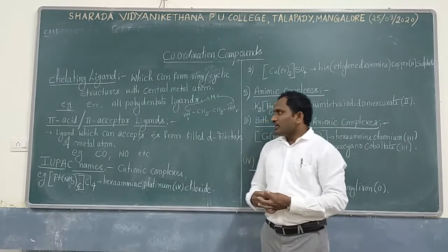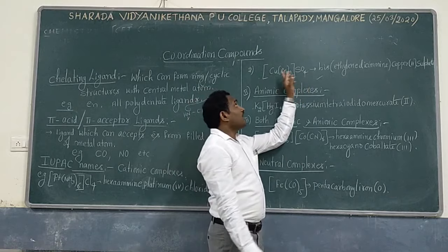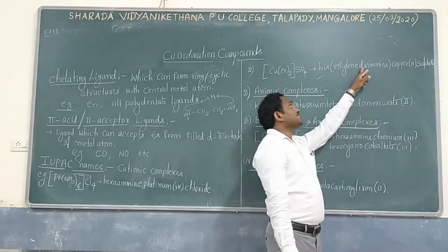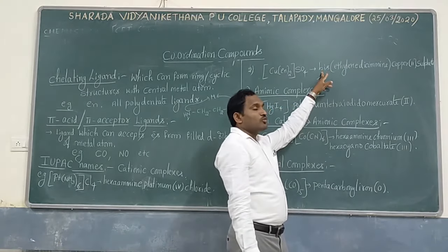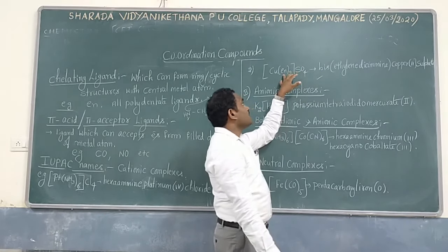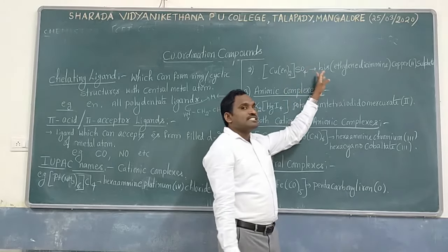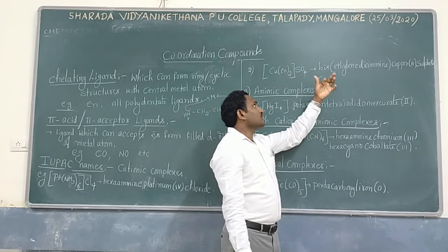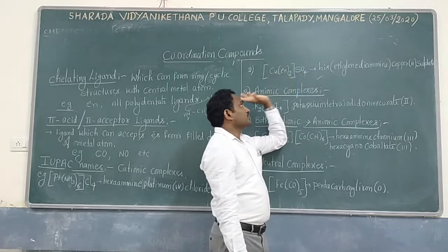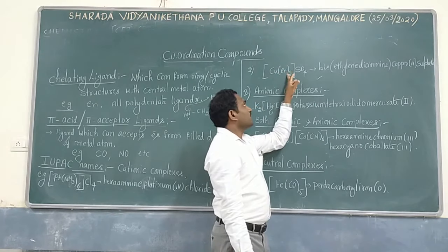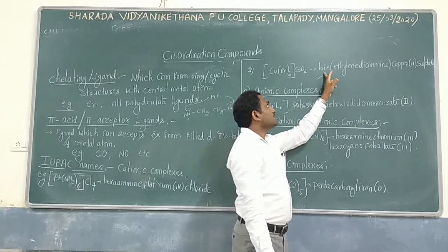Next: another compound with a bidentate ligand. The rule I am going to cover: 'en' — en's name is ethylenediamine. Now, already here the numerical prefix 'di' is there, so we cannot write 'di' one more time. In such case, if ligands have a numerical prefix like di or tri, we need to use bis, tris, tetrakis — for 2, 3, 4 times it repeats. Now 2 times it is repeated, so we are using bis.